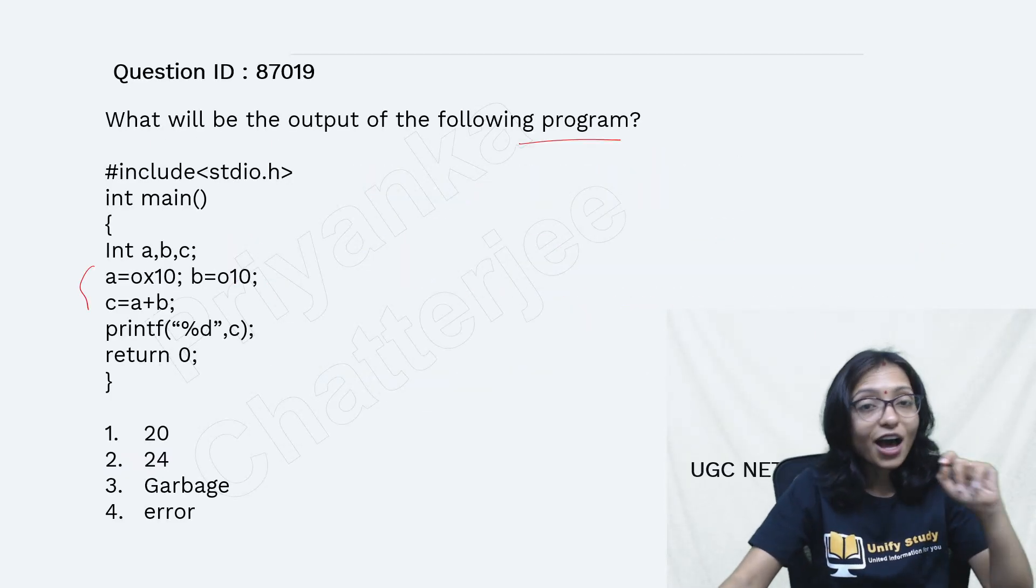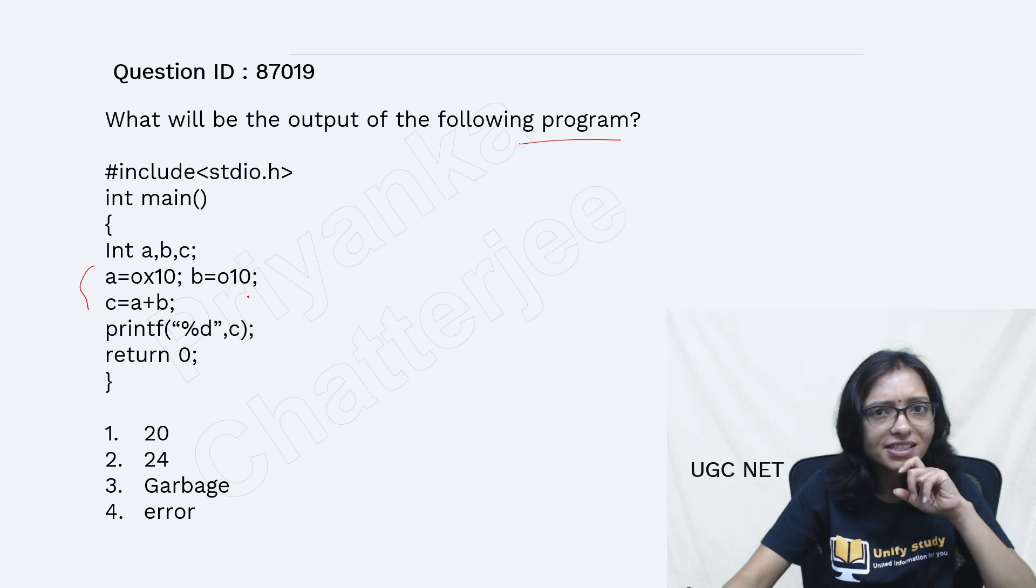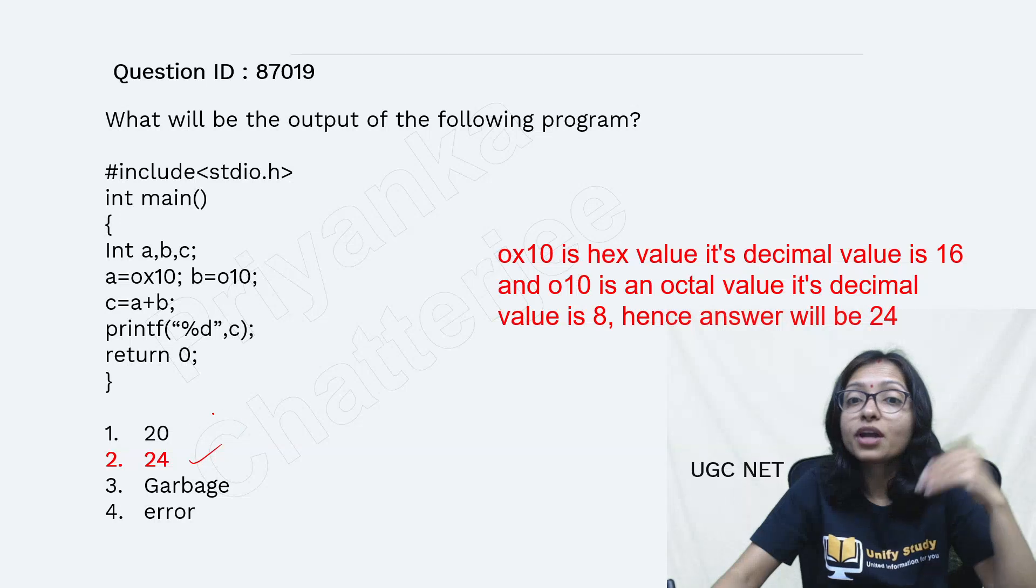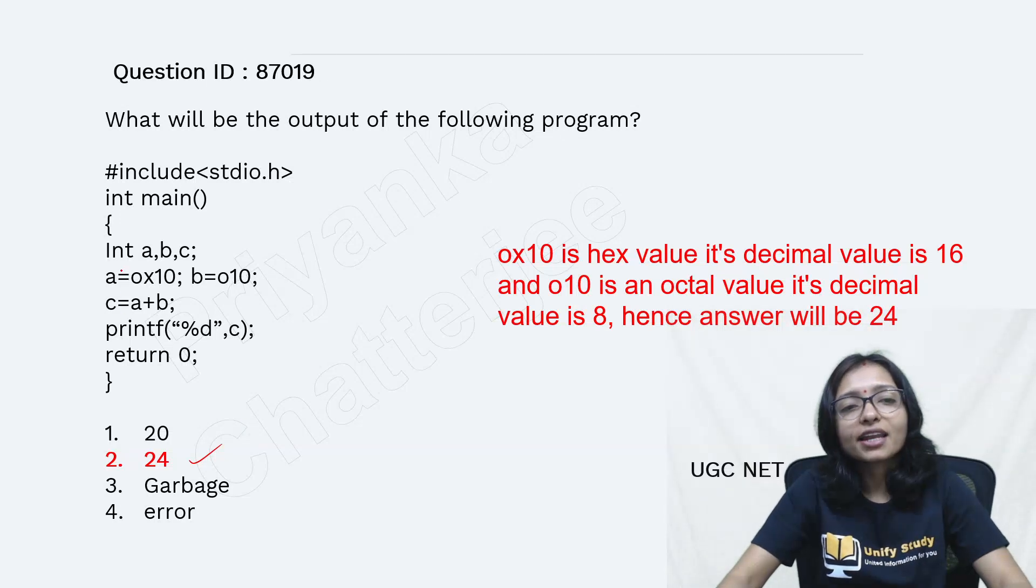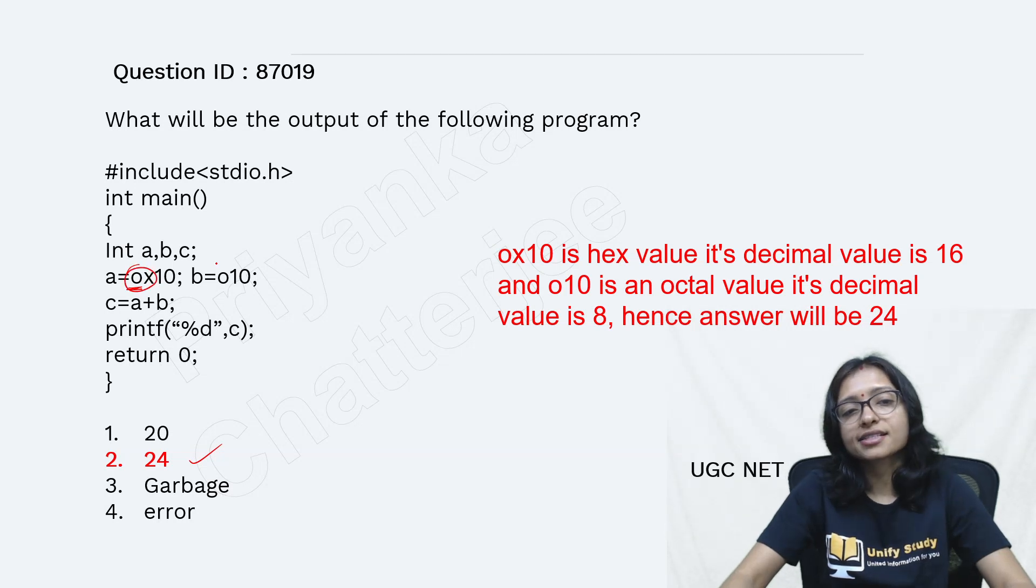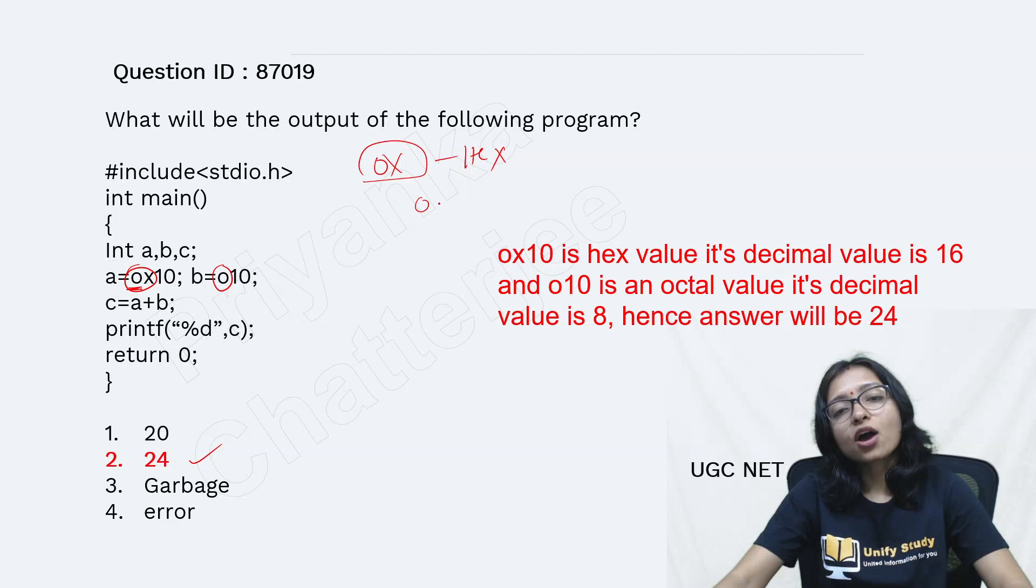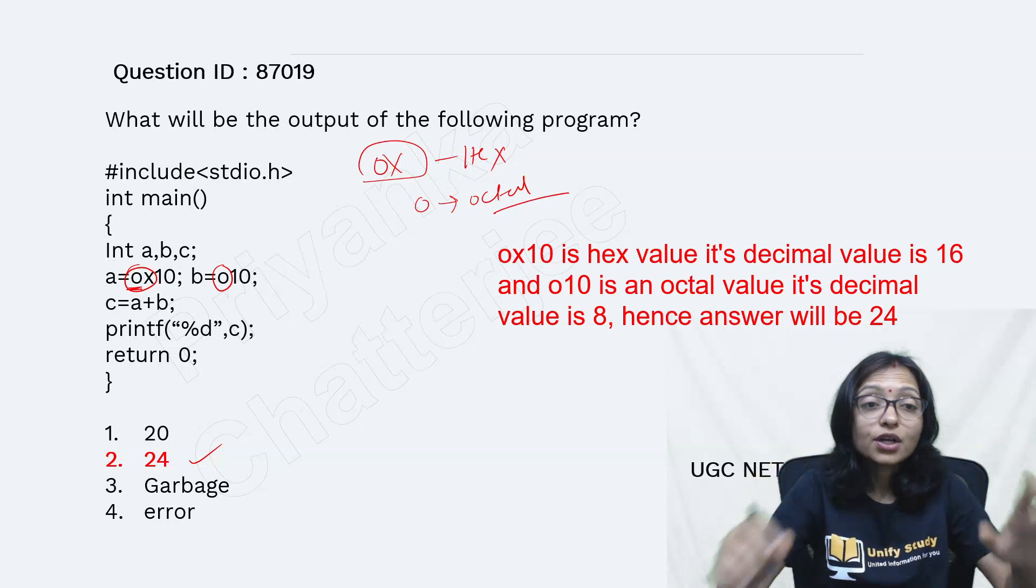How many of you are getting confused? What is the answer here? The answer is 24. Why 24? How 24? Here you have to see, this is 0x, this is 0 means 0x. This is actually hexadecimal number. It is the representation of hexadecimal number. And this 0, this is the representation of octal number.